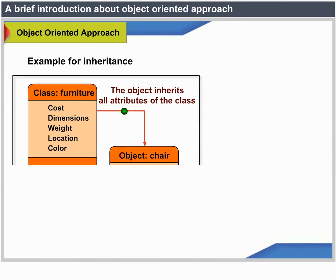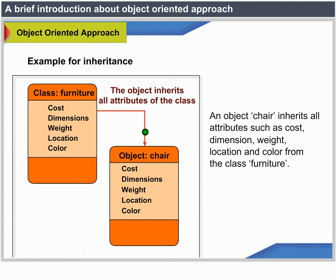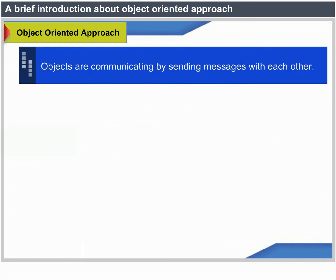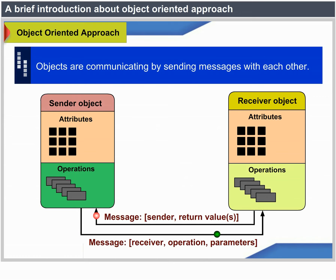Examples for inheritance. Message format in communication: message, destination, operation, parameters. Objects communicate by sending messages to each other.